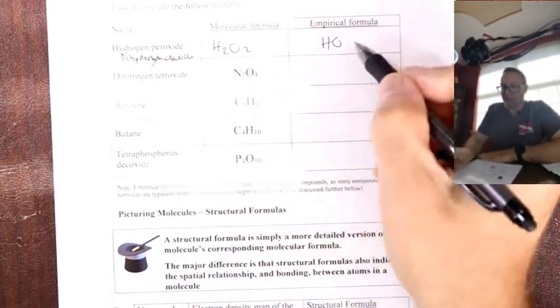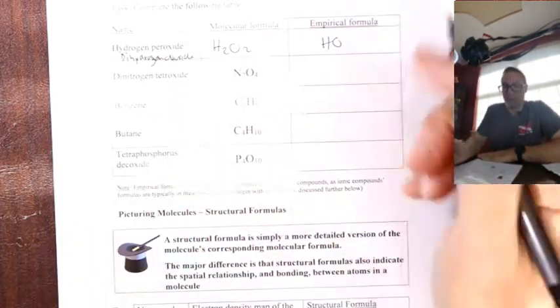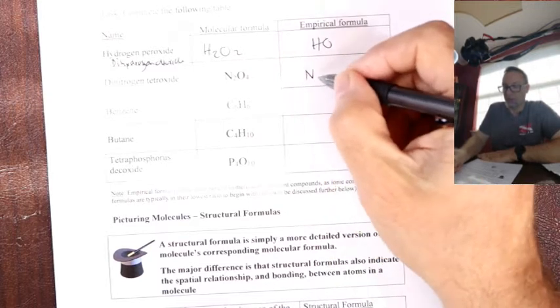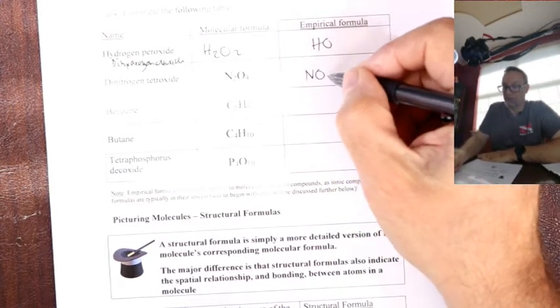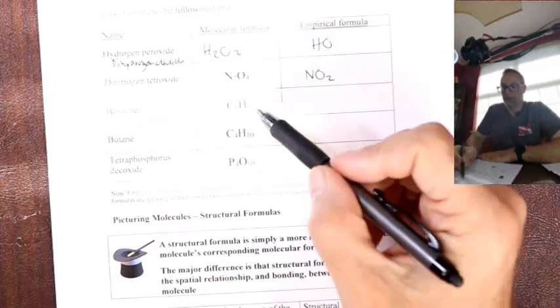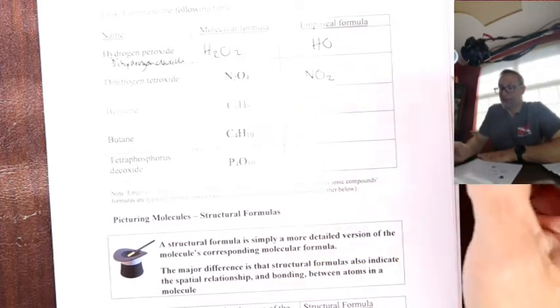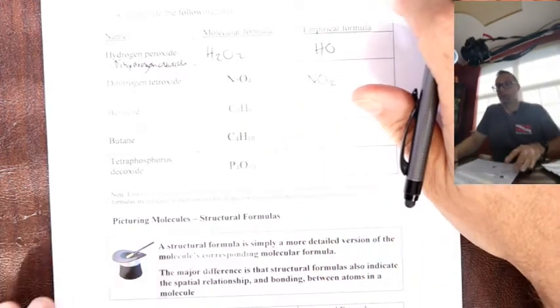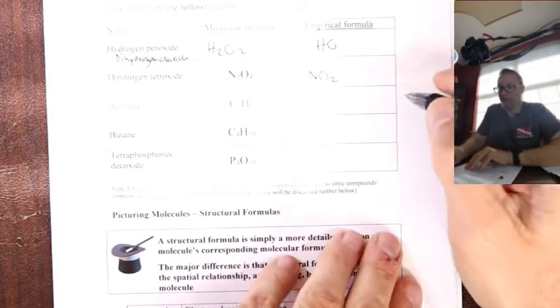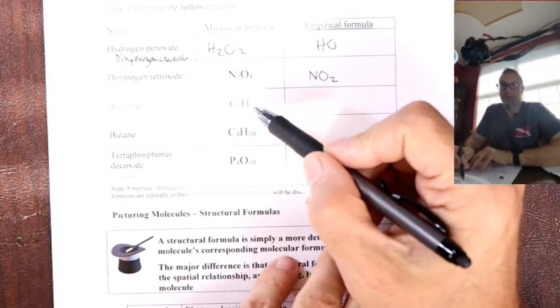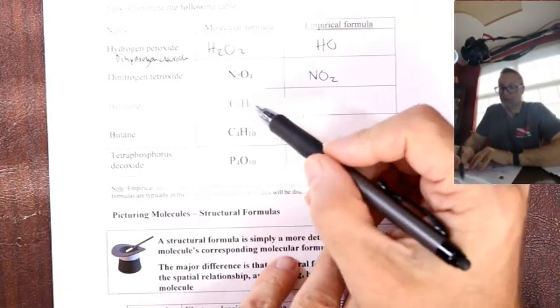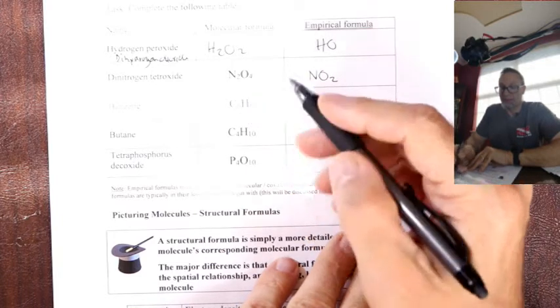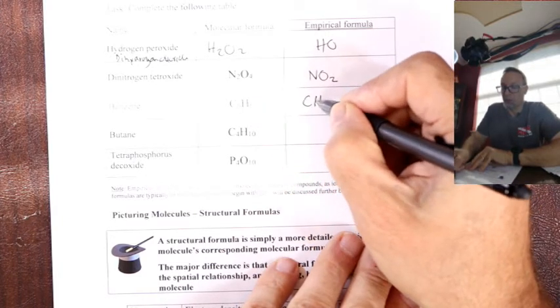Now, what we can do then, we can obviously turn what we see in nature, the molecular formula, into an empirical. So let's do that first one. Hydrogen peroxide, let's call it what it really is, dihydrogen dioxide, H2O2, HO. That's the lowest ratio. Try and work these out. So a good spot to pause. Turn the molecular into the empirical.